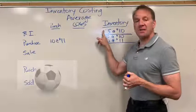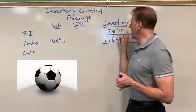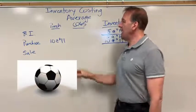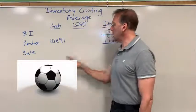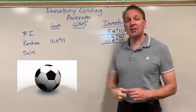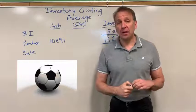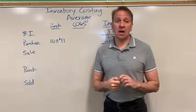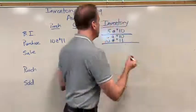We have beginning inventory of five soccer balls and their cost is ten dollars. Then we purchase ten more at eleven dollars. Under the average method, just before a sale, we have to calculate the average cost. So let's do this off to the side here.